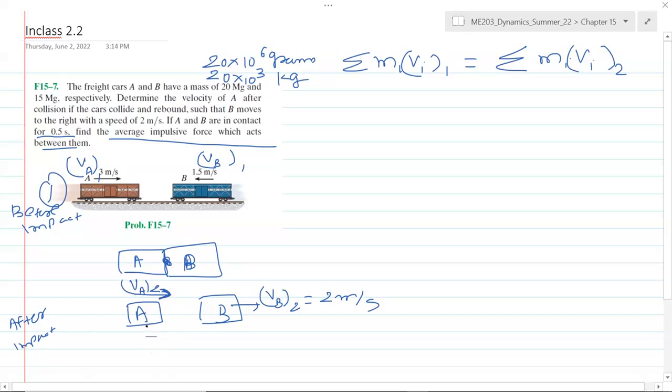With this assumption we solve the problem. If the scalar value that we get is positive, that means our assumption is right. If we get the answer negative, that means our assumption is wrong and A goes to the left direction after impact. So let's write down and expand this equation for A and B.